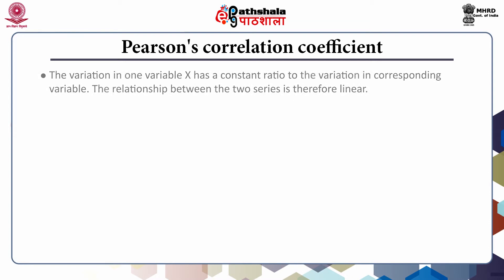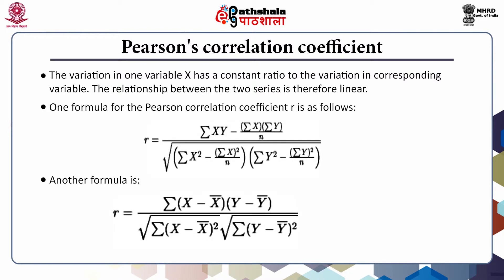The variation in one variable x has a constant ratio to the variation in the corresponding variable. The relationship between the two series is therefore linear. The formula for calculating Pearson's correlation coefficient r or rho is given below.